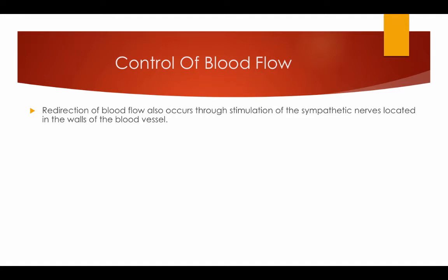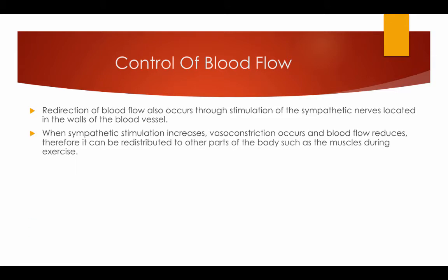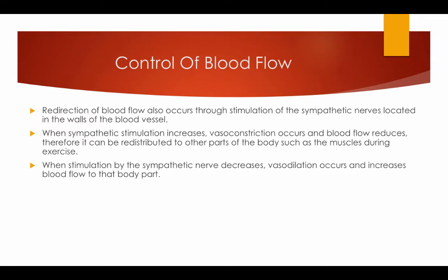Redirection of blood also occurs through the stimulation of the sympathetic nerves located on the walls of the blood vessels. When sympathetic stimulation increases, vasoconstriction occurs and blood flow reduces, so it can be redistributed to other parts of the body such as muscles during exercise. When stimulation by the sympathetic nerve decreases, vasodilation occurs and increases blood flow to that body part.